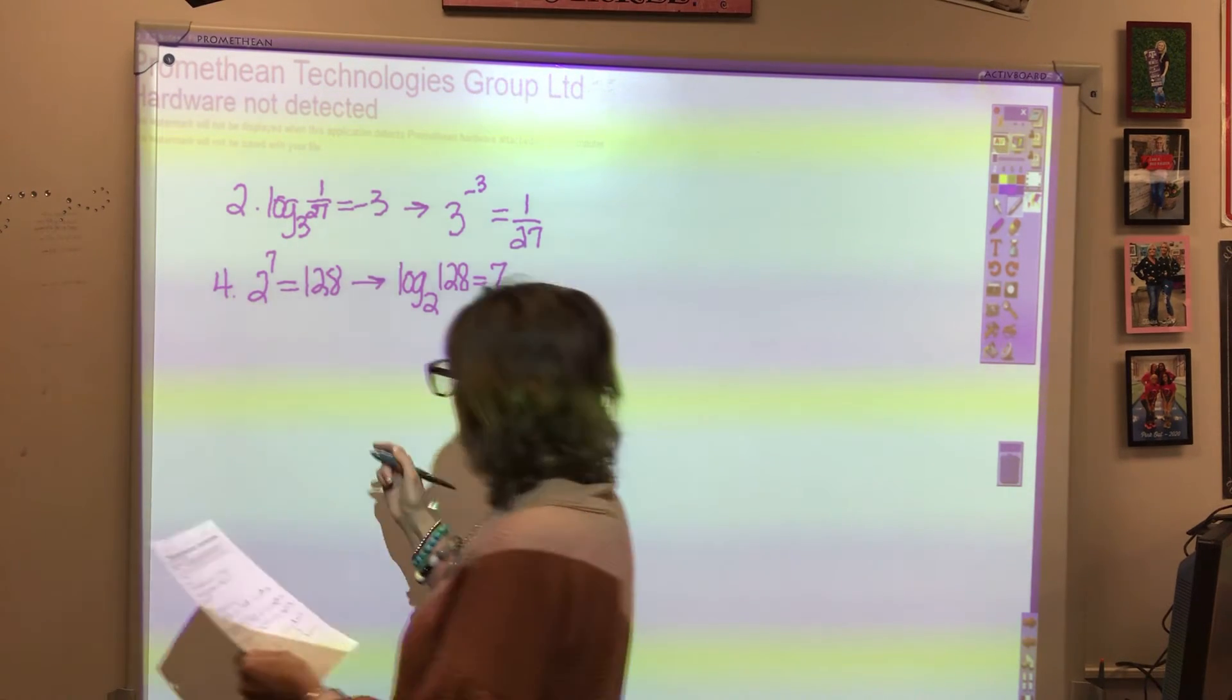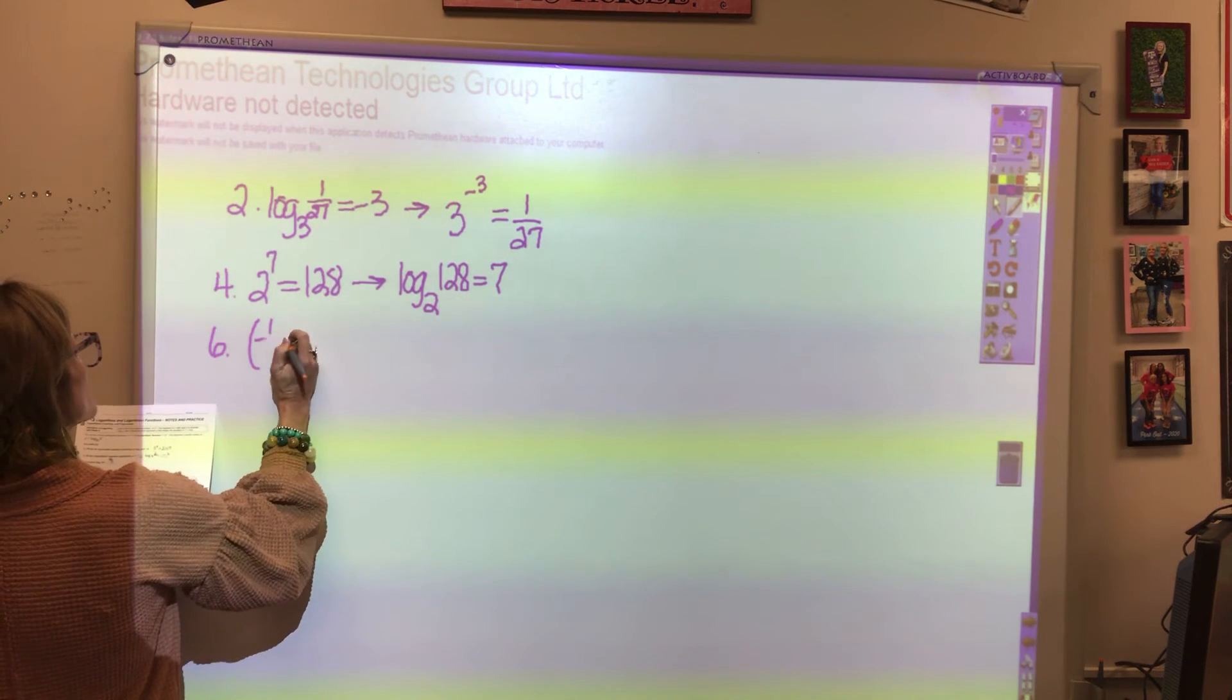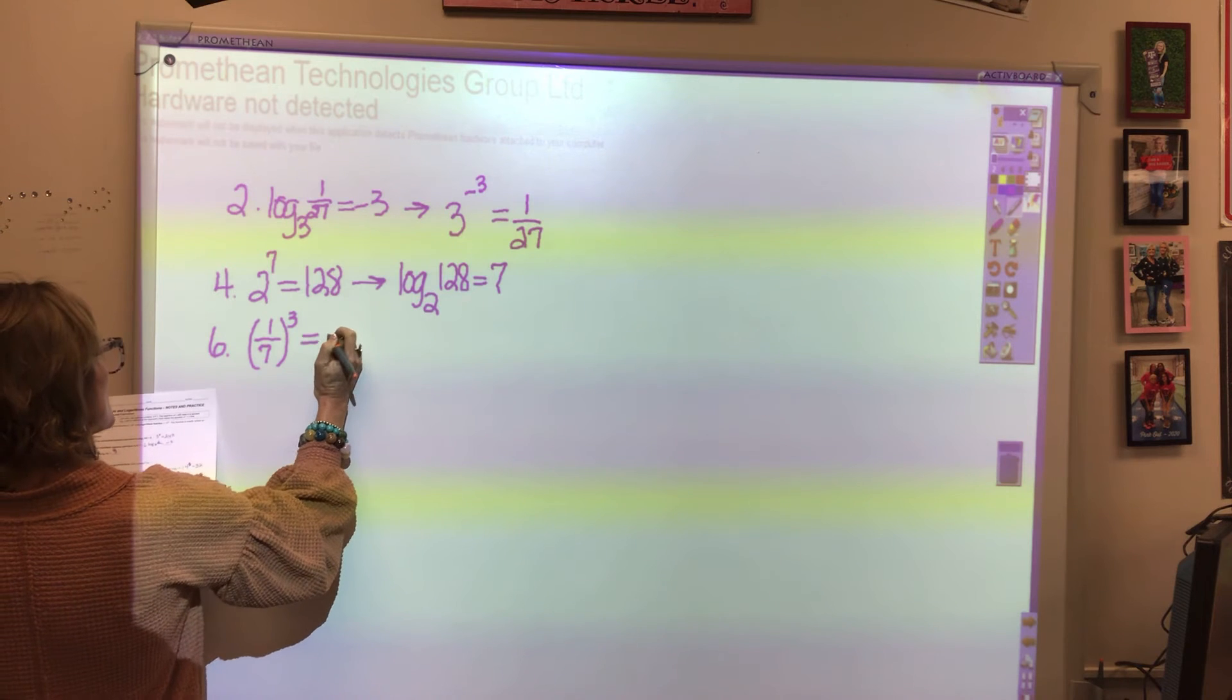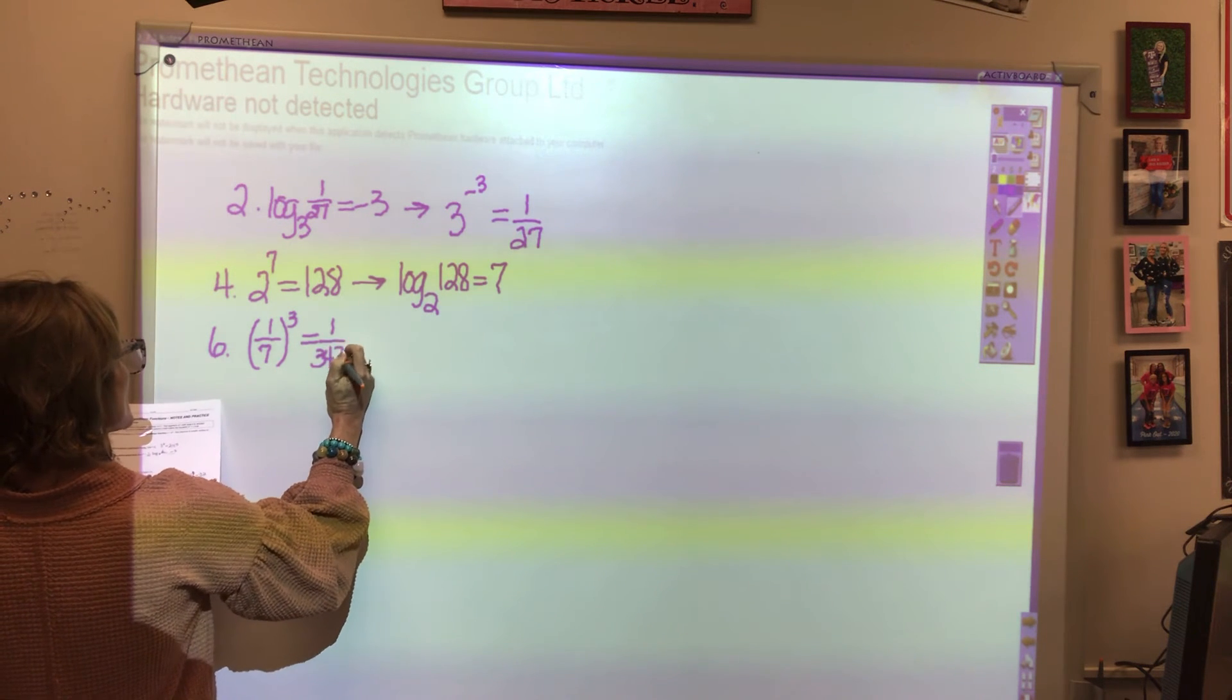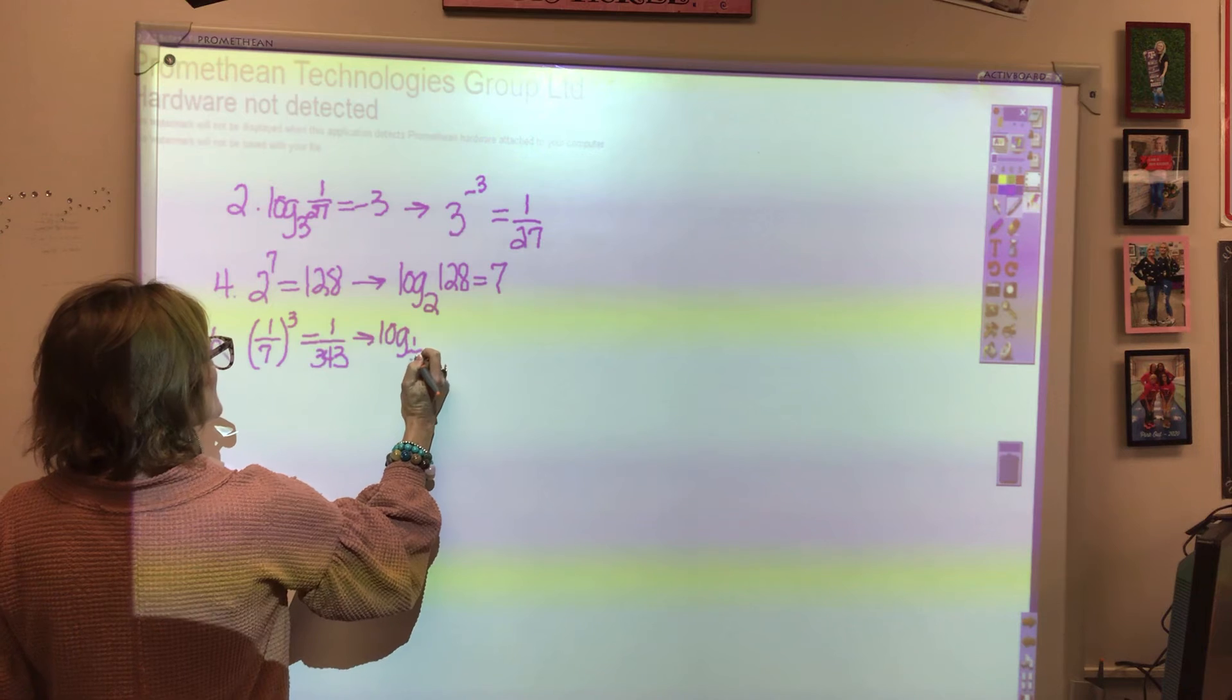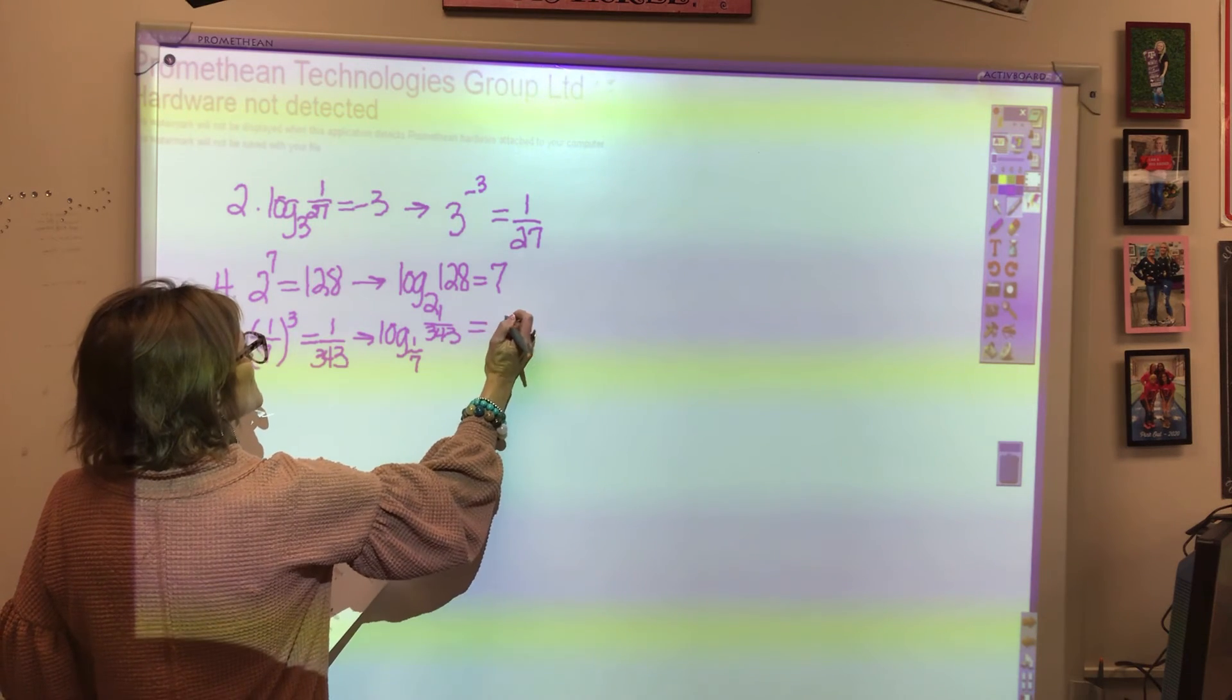Okay, then number six, we have 1/7 cubed equals 1 over 343. Convert it to a log, log base 1/7 of 1 over 343 equals 3.